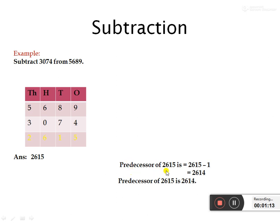Next, the predecessor of 2615. Predecessor means we write the given number first, then subtract 1. So 2615 minus 1: in the ones place, 5 minus 1 is equal to 4. Answer is 2614. The predecessor of 2615 is 2614.